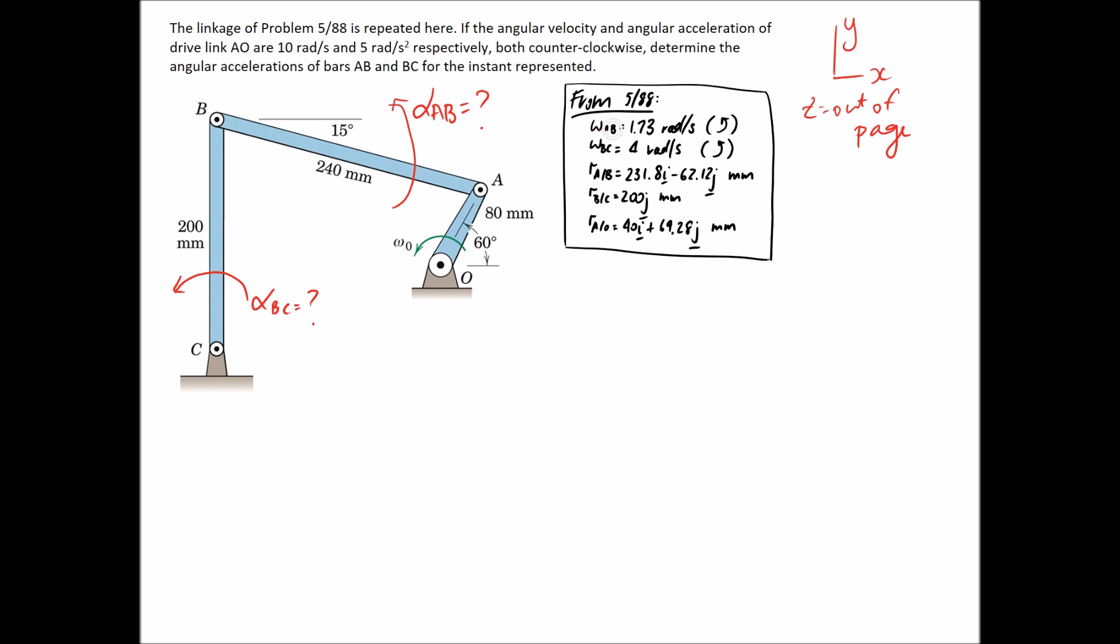Now we know what the angular velocities are for each of those different members. So let's mark them in. 1.73, this is 4. And up in the question here, we're told that AO has got a speed and angular velocity as well. So let's put them in.